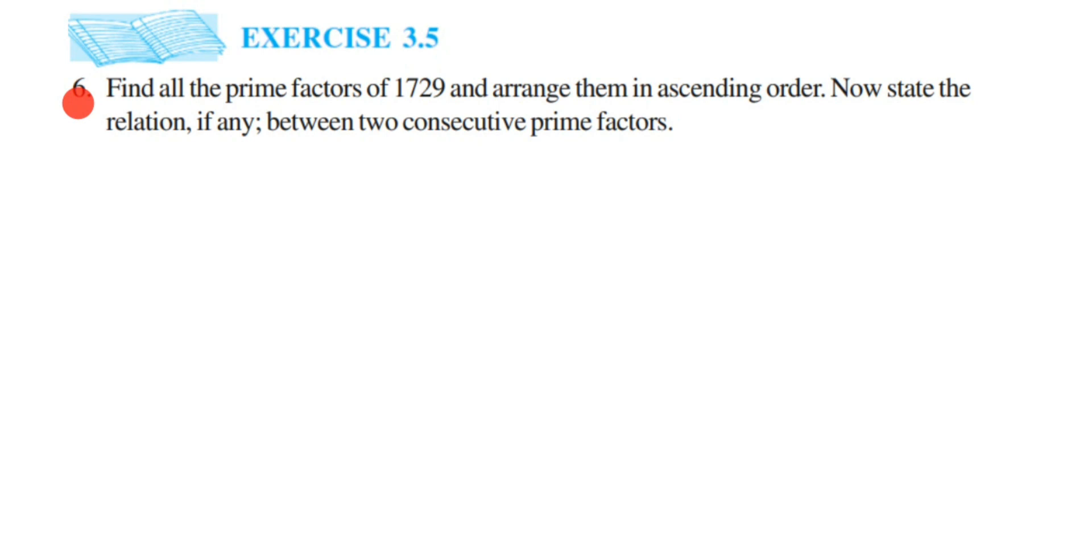The question is: find all the prime factors of 1729 and arrange them in ascending order. Now state the relation, if any, between two consecutive prime factors. So first we're going to find out the prime factors of 1729.